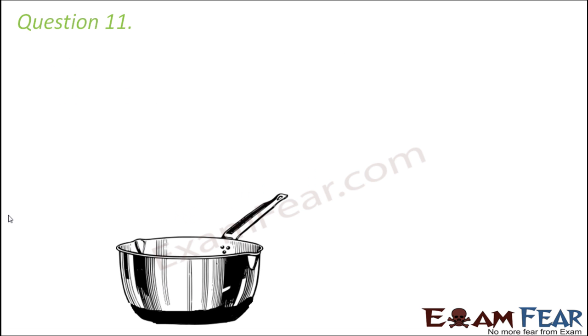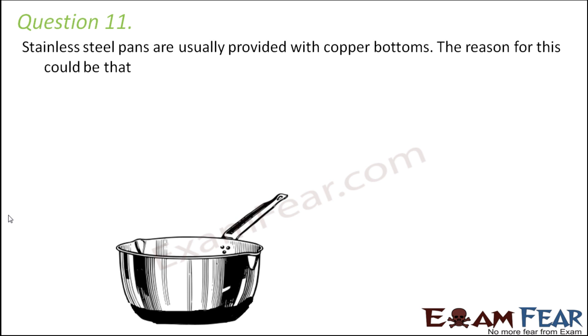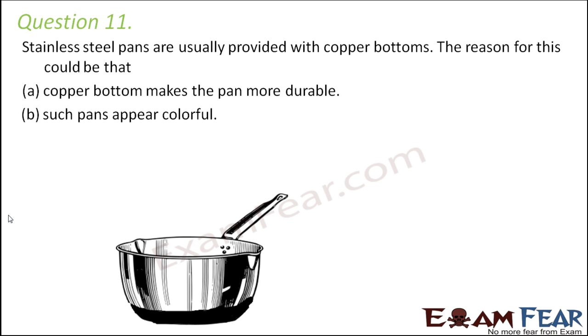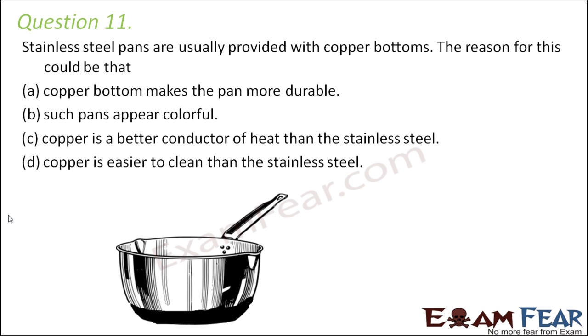Question number 11. Stainless steel pans are usually provided with copper bottoms. The reason for this could be that - there are four options. Copper bottom makes the pan more durable - durability is not the reason. Such pans appear colorful - appearance shouldn't be that important.